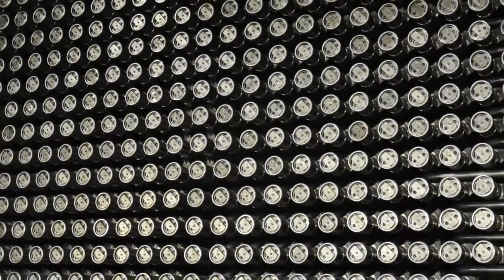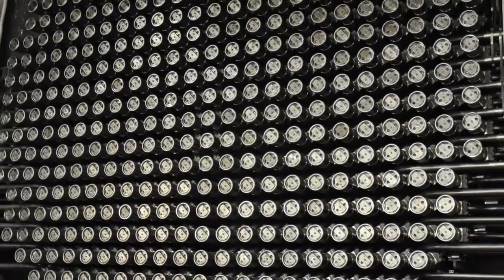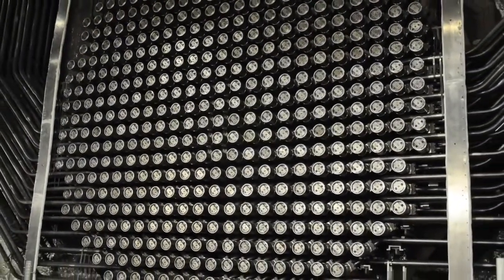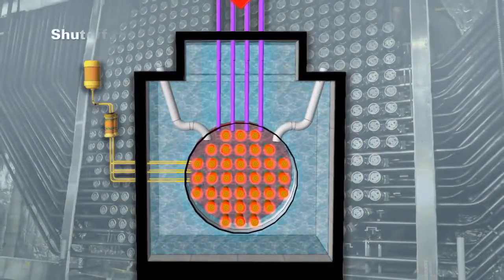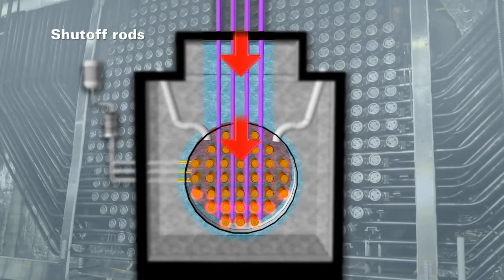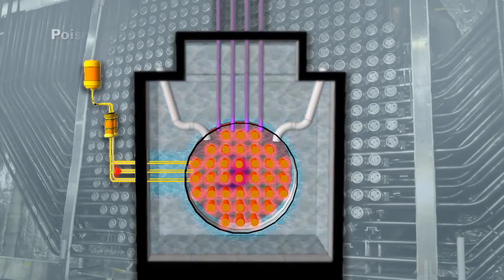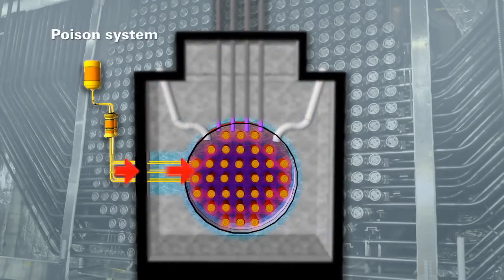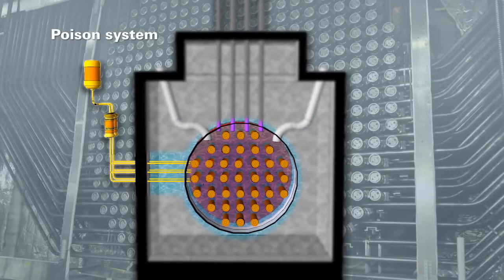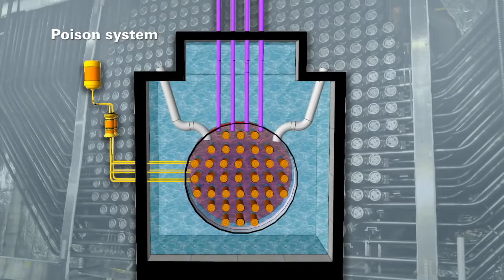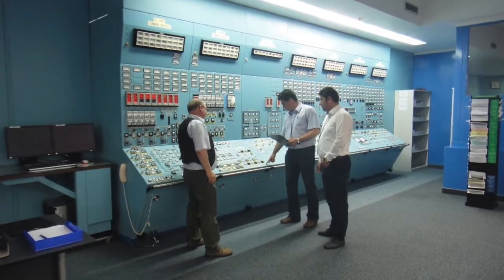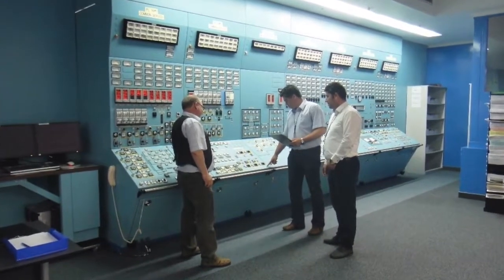Nuclear reactors have two independent, fast-acting and equally effective shutdown systems. The first shutdown system is made up of rods that drop automatically and stop the nuclear reaction if something irregular is detected. The second system injects a liquid, or poison, inside the reactor to immediately stop the nuclear reaction. Both systems work without power or operator intervention. However, they can also be manually activated.